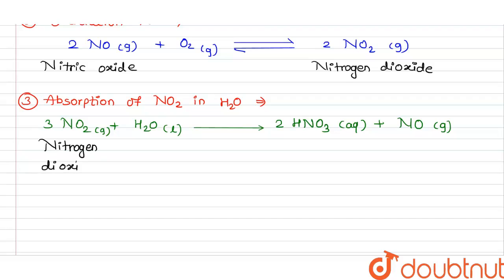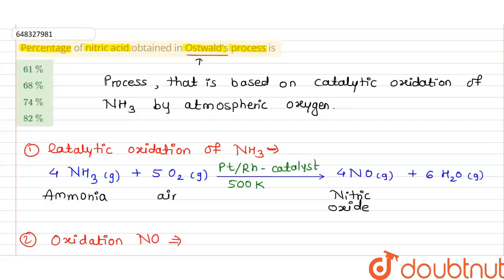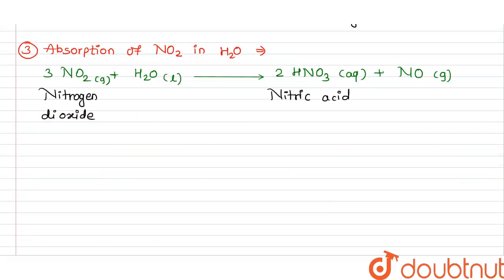So we use nitrogen dioxide and obtain the desired nitric acid (HNO3). The question asks for the percentage of this nitric acid. This nitric acid can be concentrated by the distillation method.